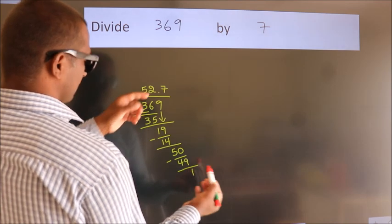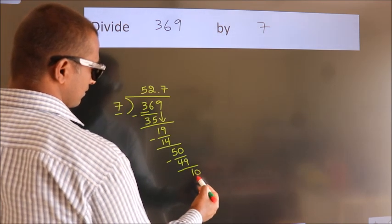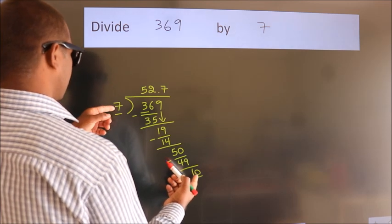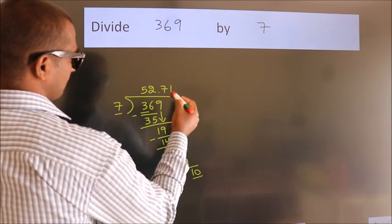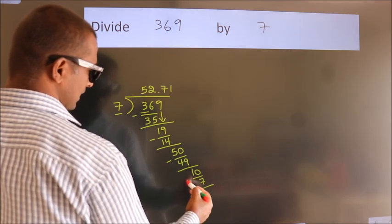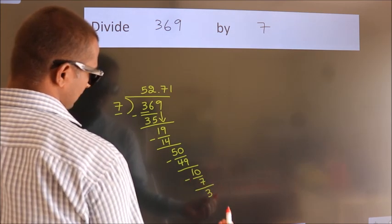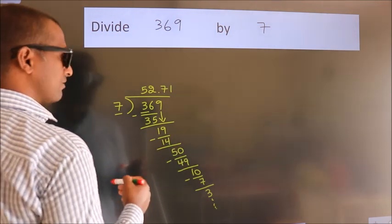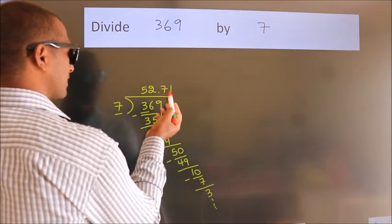After this, we already have the decimal, so directly take zero, so 10. A number close to 10 in the seven table is seven ones, 7. Now we subtract. We get 3, and the division continues. It is enough if we do up to two decimal places.